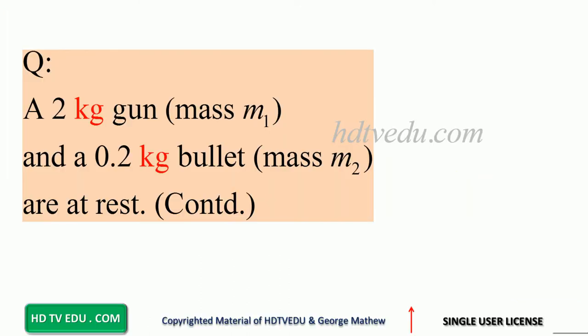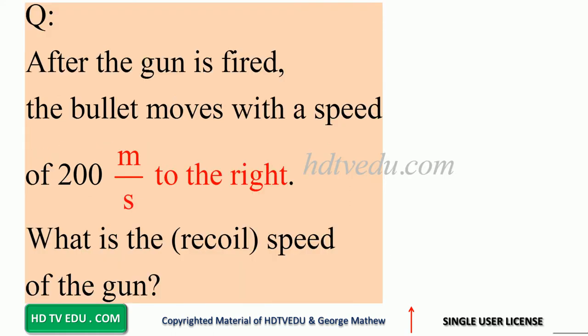A 2 kg gun, mass M1, and a 0.2 kg bullet, mass M2, are at rest. After the gun is fired, the bullet moves with a speed of 200 meters per second to the right. What is the recoil speed of the gun?